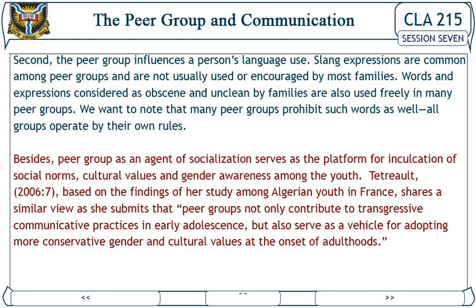Second, the peer group influences a person's language use. Slang expressions are common among peer groups and are not usually used or encouraged by most families. Words and expressions considered obscene and unclean by families are also used freely in many peer groups — though we want to note that many peer groups prohibit such words as well. All groups operate by their own rules. Besides, the peer group as an agent of socialization serves as the platform for inculcation of social norms, cultural values, and gender awareness among youths.